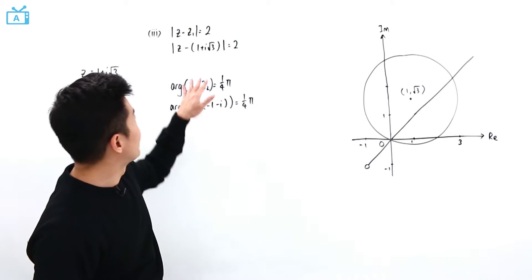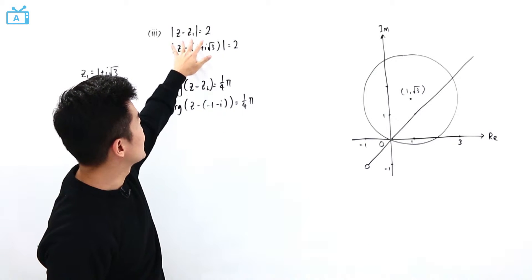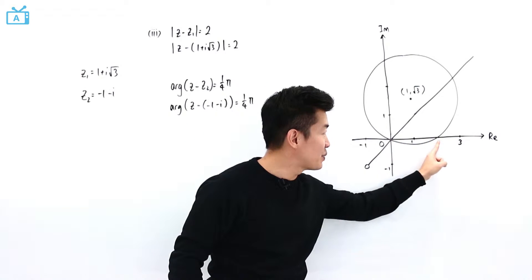What we are supposed to do now is to locate the point where this locus is going to cut the positive real axis, which means that it is this point here.